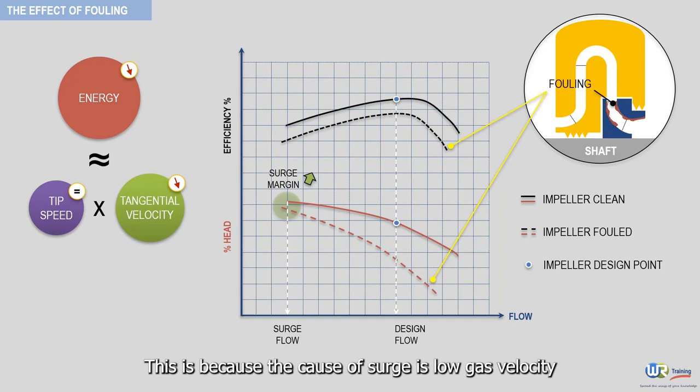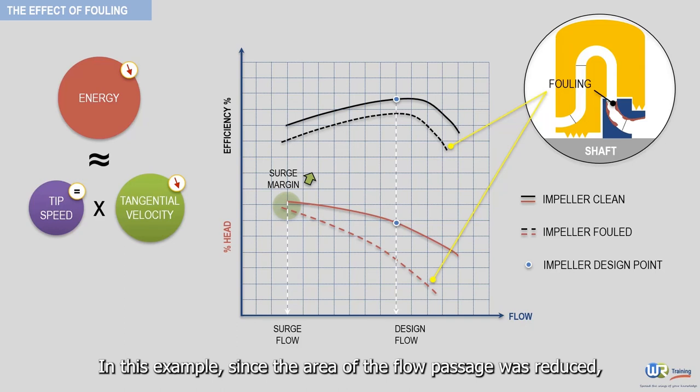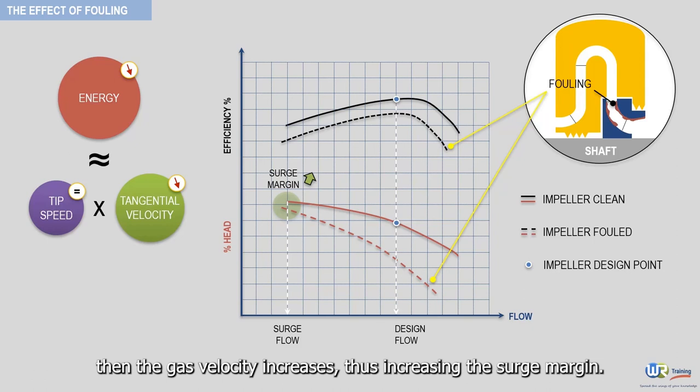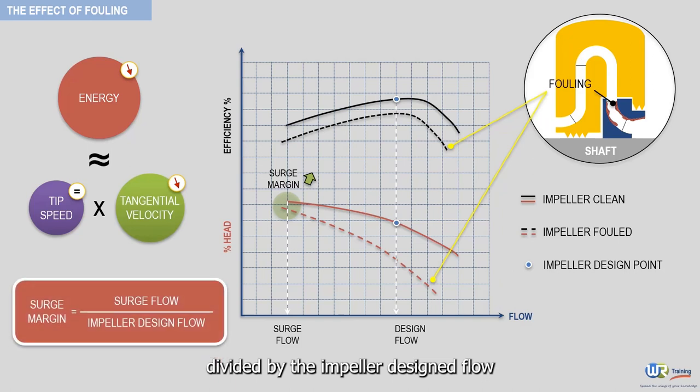This is because the cause of surge is low gas velocity. In this example, since the area of the flow passage is reduced, the gas velocity increases, thus increasing the surge margin. The surge margin is defined as the flow at surge divided by the impeller design flow.